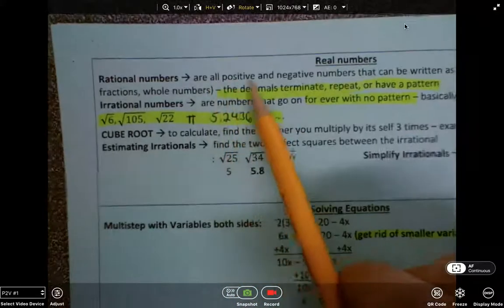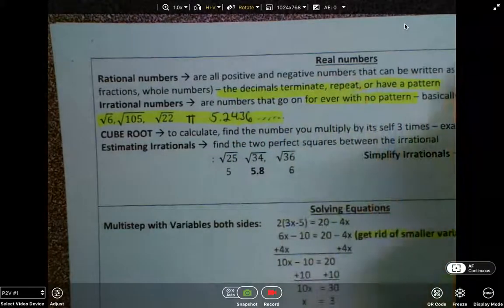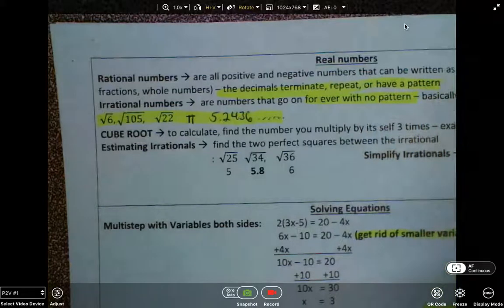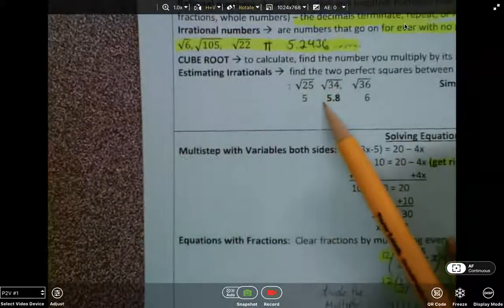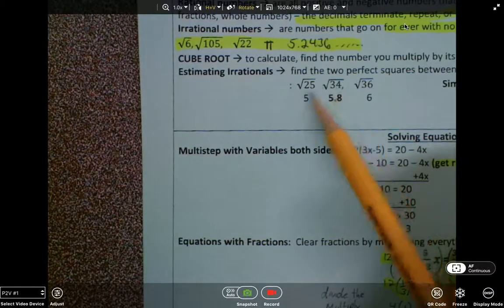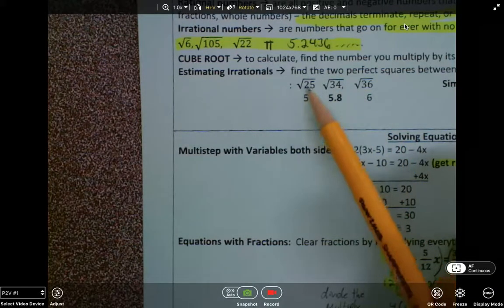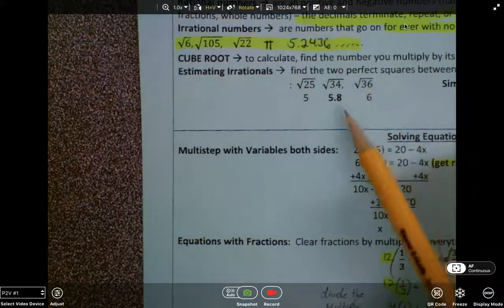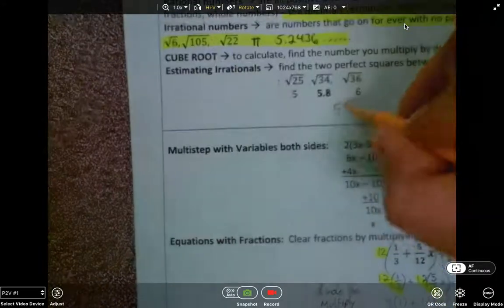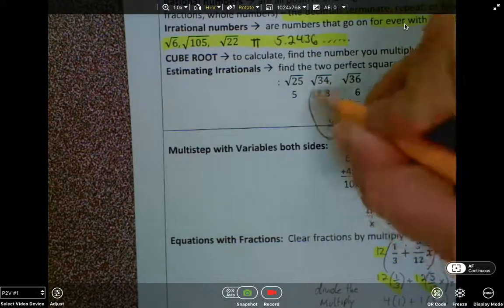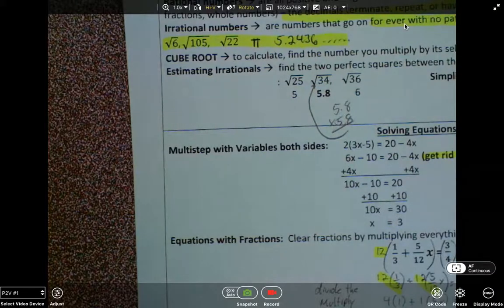Rational numbers are any positive or negative numbers that can be written as a fraction, so they end, repeat, or have some type of pattern to it. We also learned how to estimate irrational square roots, like square root of 34, and it was between 5 and 6 because it's between square root of 25 and square root of 36, and then you'd have to multiply like 5.8 times 5.8 until you got really close to 34 to the nearest tenth.